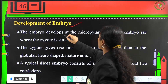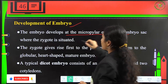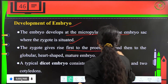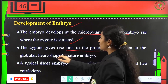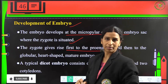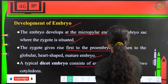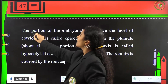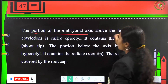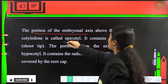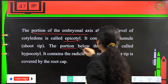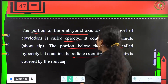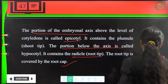The embryo develops at the micropylar end of the embryo sac where the zygote is situated. The zygote gives rise first to the pro-embryo and then to a globular, heart-shaped mature embryo. A typical dicot embryo consists of an embryonal axis and two cotyledons. The portion of the embryonal axis above the cotyledons is called the epicotyl, which contains the plumule, while the portion below is called the hypocotyl, which contains the radicle. The root tip is covered by the root cap.